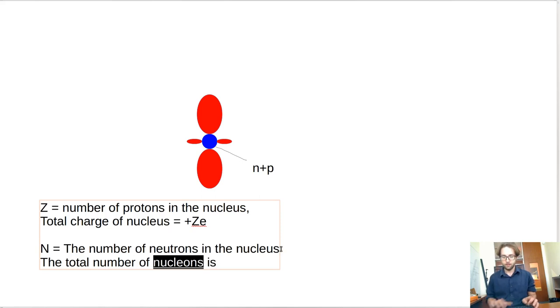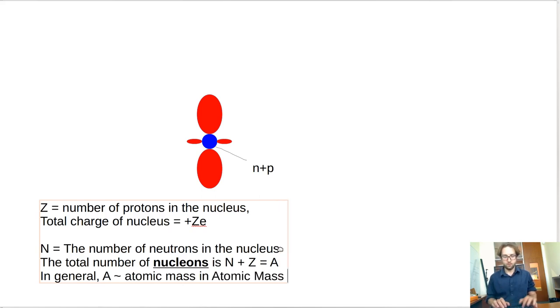So while the chemical element is uniquely determined by Z, as you may have heard, for a given Z, you can have different numbers of neutrons in the nucleus, and so those are what are called isotopes of that element. And so the summation of these two is the total number of nucleons. So the total number of nucleons is N plus Z, and we give this the letter A.